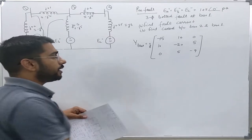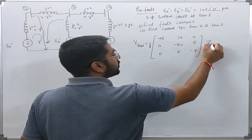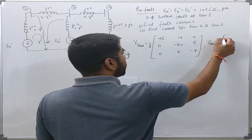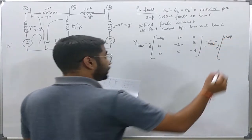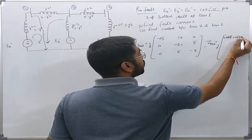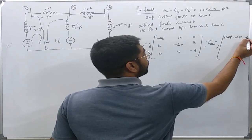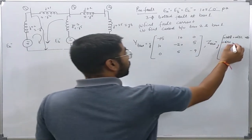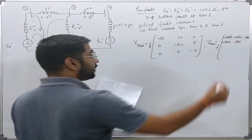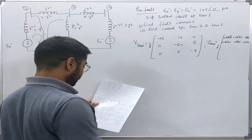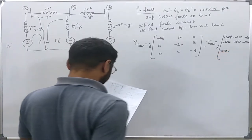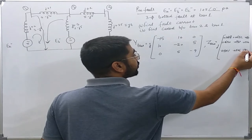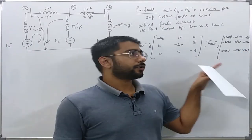Using the calculator, I have already inverted this. So Z_bus will be inverse of this, and it comes out to be, j is outside: 0.1088, 0.0632, 0.0351, 0.0632, 0.0947, 0.0526, 0.0351, 0.0526, 0.1409. So this is the bus impedance matrix for the given network.